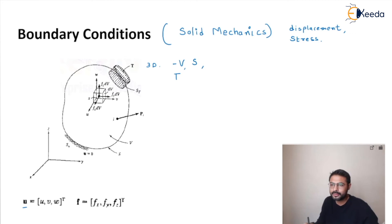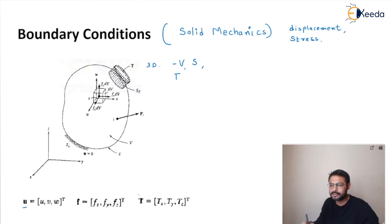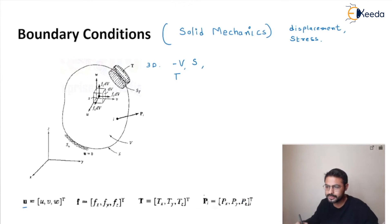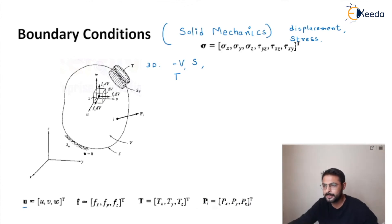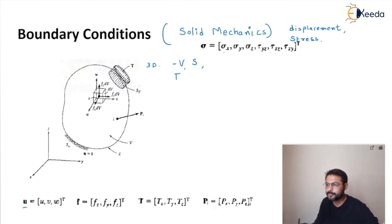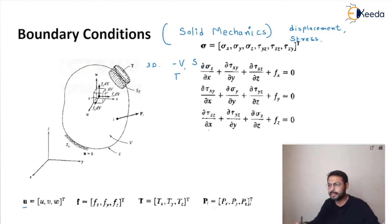The force applied at a particular point has three different components: F_X, F_Y, and F_Z. The traction force also has three components: T_X, T_Y, and T_Z. The deflection is a function of load P acting on that point, with components P_X, P_Y, and P_Z. The stresses produced will be a combination of static stresses and shear stresses, and we can solve this problem by applying these conditions.